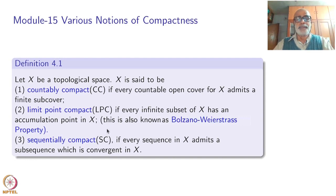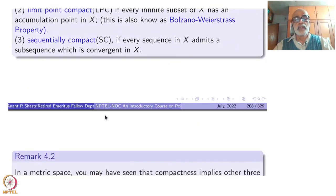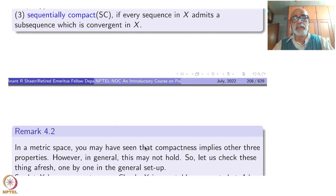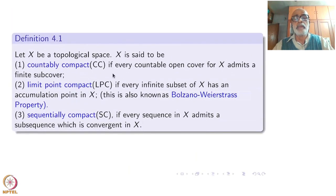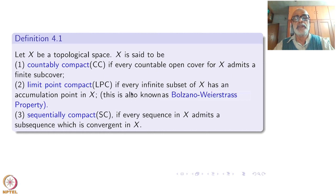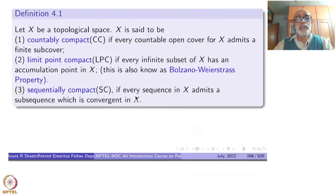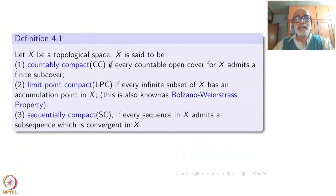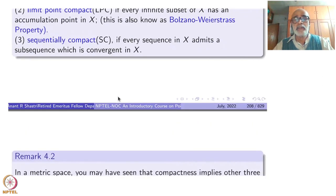So: countable compactness is somewhat dual to Lindelof; limit point compactness and sequential compactness are two further notions. In a metric space you may have seen that compactness implies all three properties — these are the standard properties of compact metric spaces. We have extracted these properties and made them definitions in the general case. However, in general this may not be true; compact spaces may not imply any of these things, so we need to be careful.